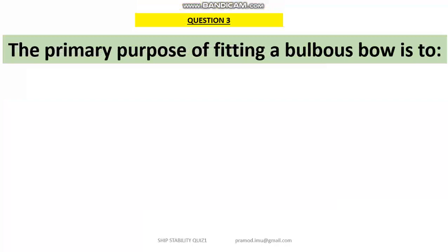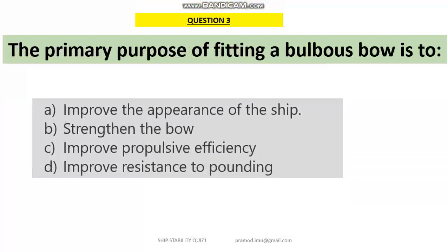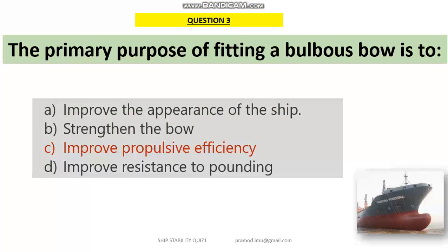Coming to question 3: the primary purpose of fitting a bulbous bow — as we all know, a bulbous bow is a projection at the forward end of the vessel which reduces the ship's resistance. So option C is the right answer for question number 3.